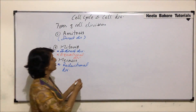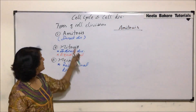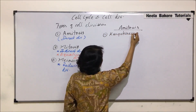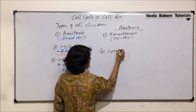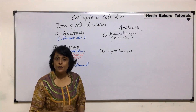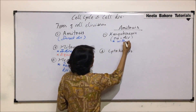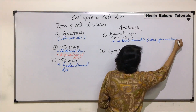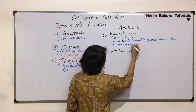We will talk of all three divisions in detail, starting with amitosis. Amitosis, as we said, is direct division. It is completed in two steps: karyokinesis and cytokinesis. Karyokinesis is nuclear division and cytokinesis is cytoplasmic division. Karyokinesis takes place without spindle fiber formation.